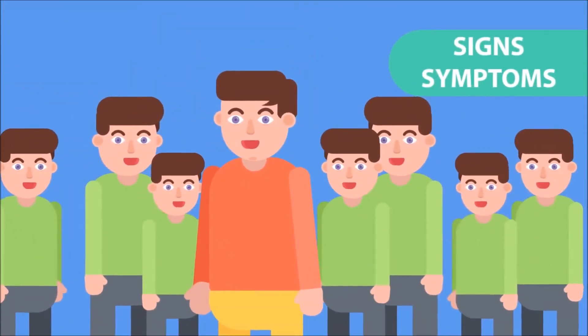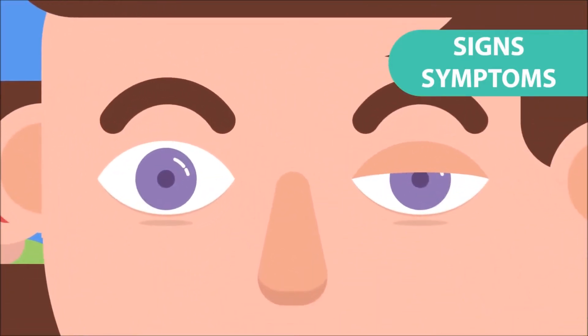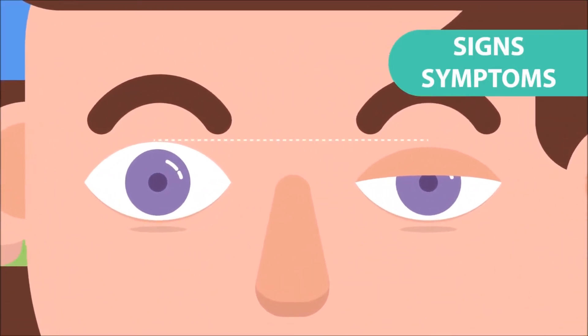Signs and symptoms. The most obvious sign of ptosis is a drooping eyelid. Another sign is when the upper eyelid creases do not line up evenly with each other.